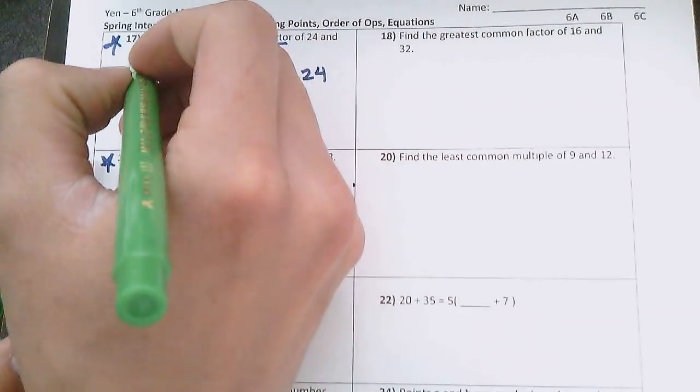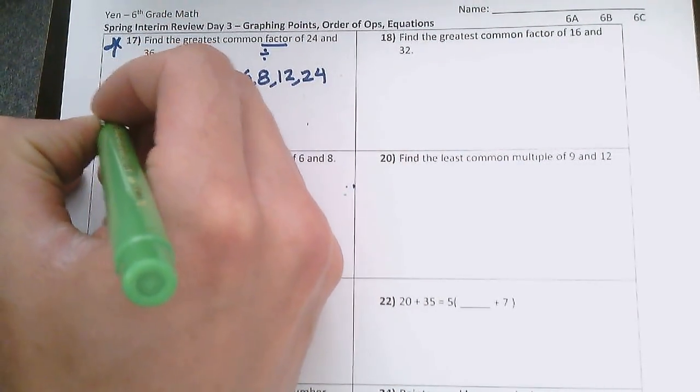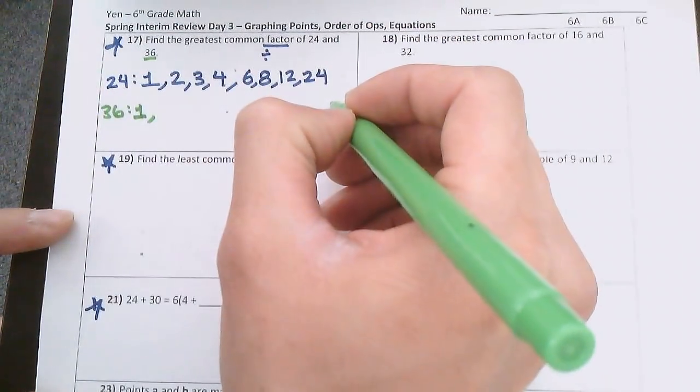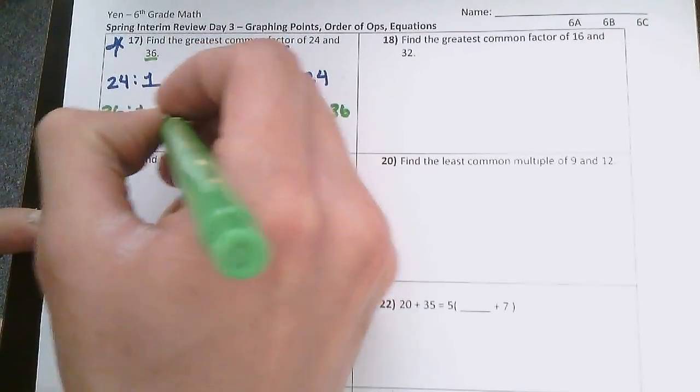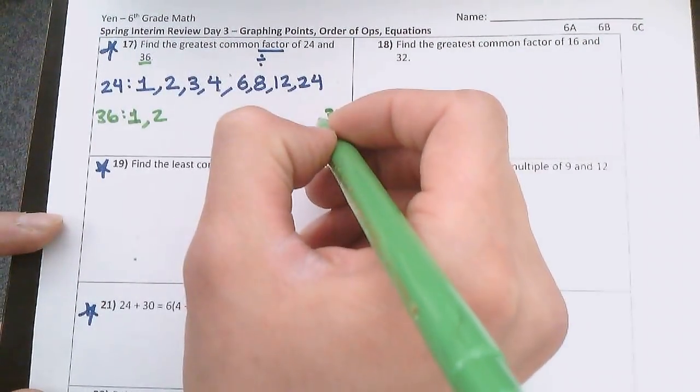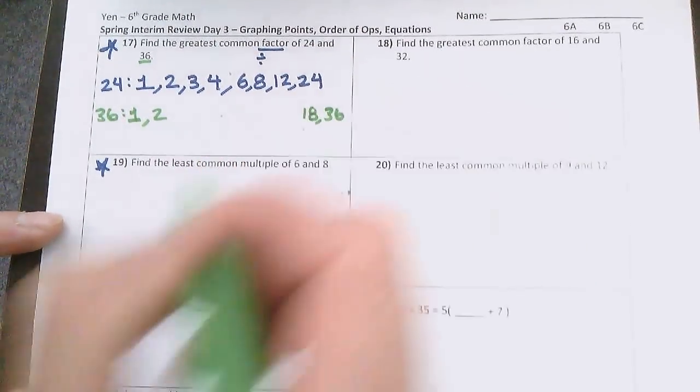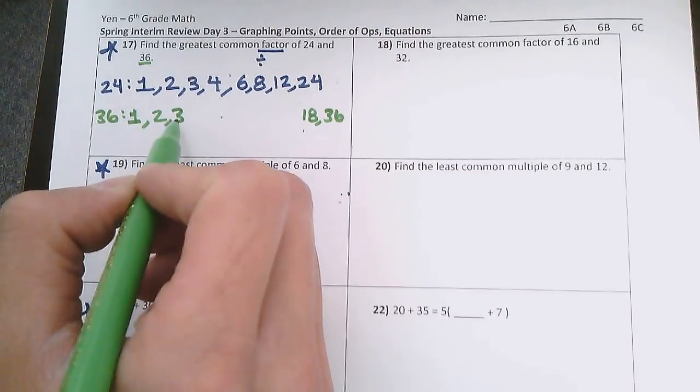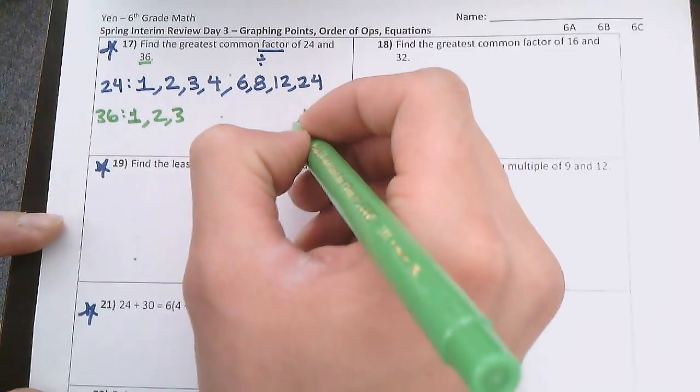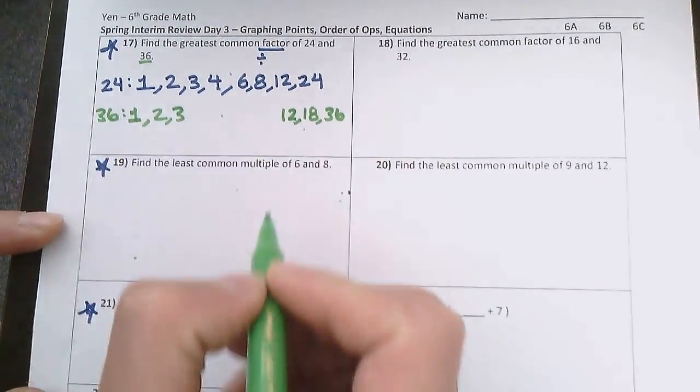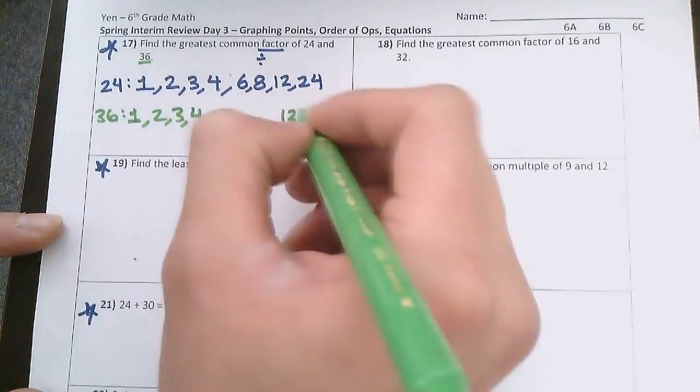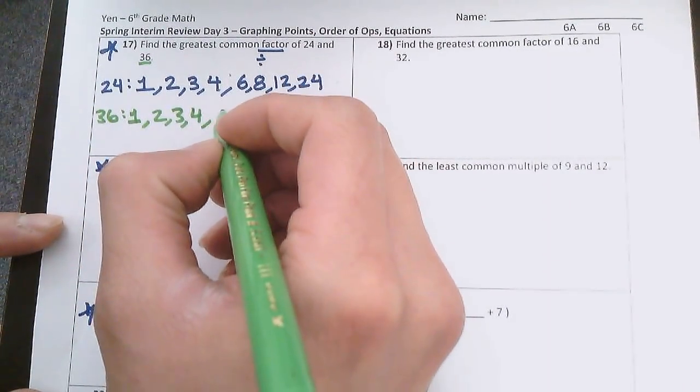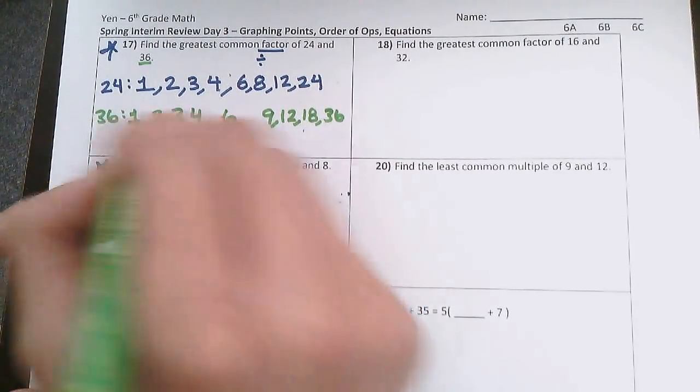The next number is 36. I'll do the same thing but for 36. What are all the factors of 36? Well, 1 is always a factor, and that means 36 divided by 1 is 36. 36 is an even number, so 2 is also a factor. 36 divided by 2 is 18. 3 is a factor. 36 divided by 3, well, 30 divided by 3 is 10, 6 divided by 3 is 2, so 10 plus 2 is 12. 4 is also a factor because 36 divided by 4 is 9. 5, it doesn't end in 5, so I know 5 is not a factor. 6 is also a factor because 6 times 6 is 36.